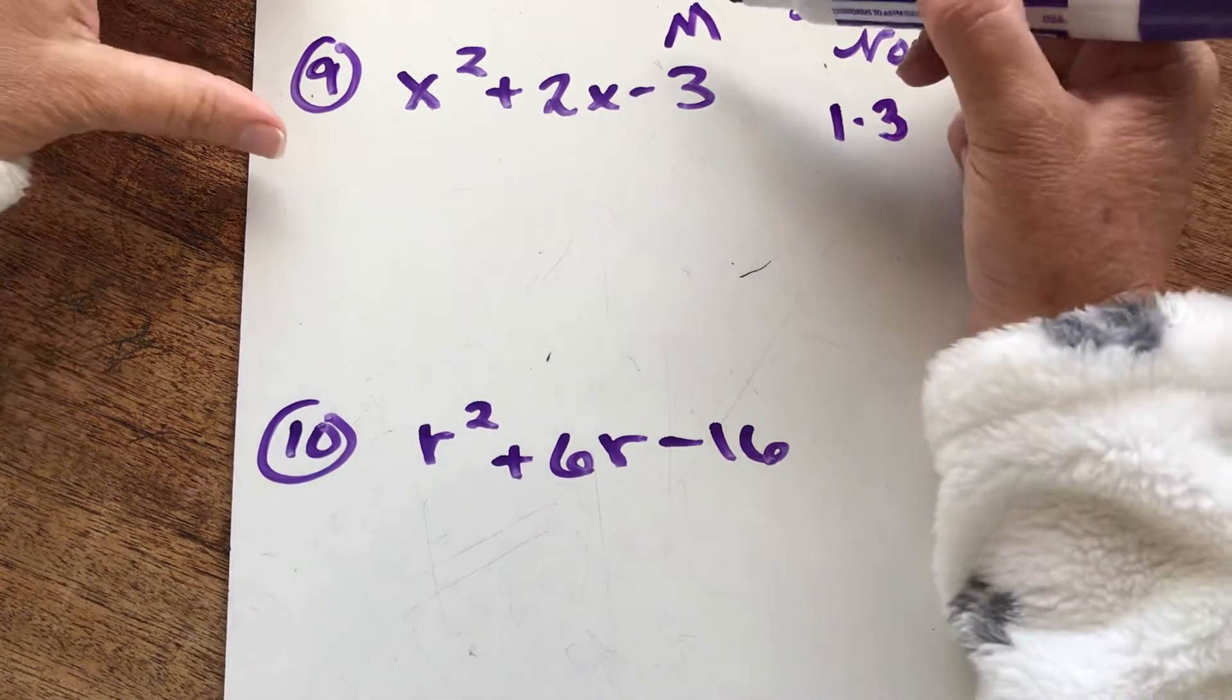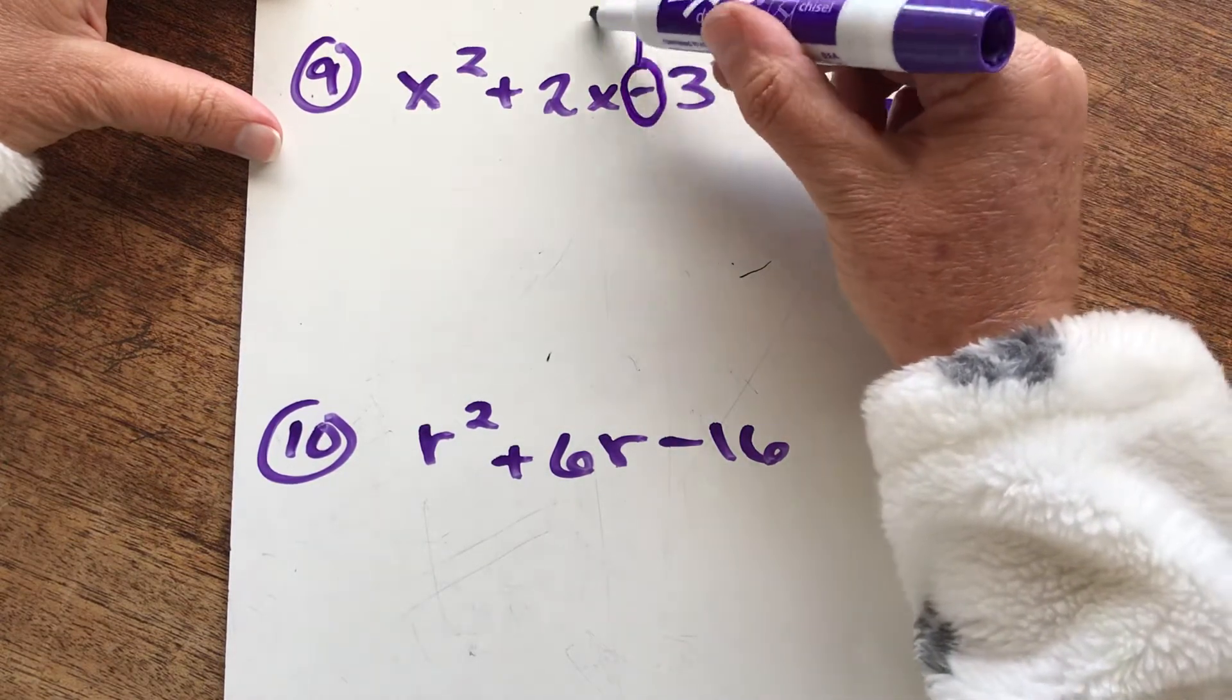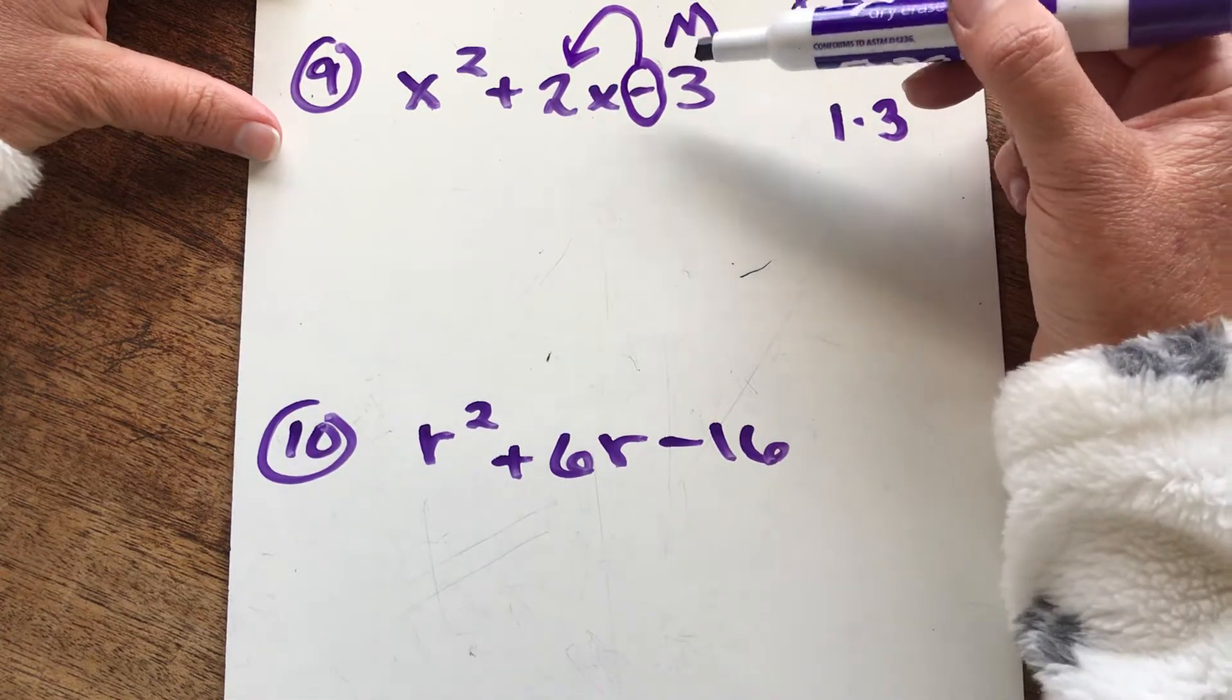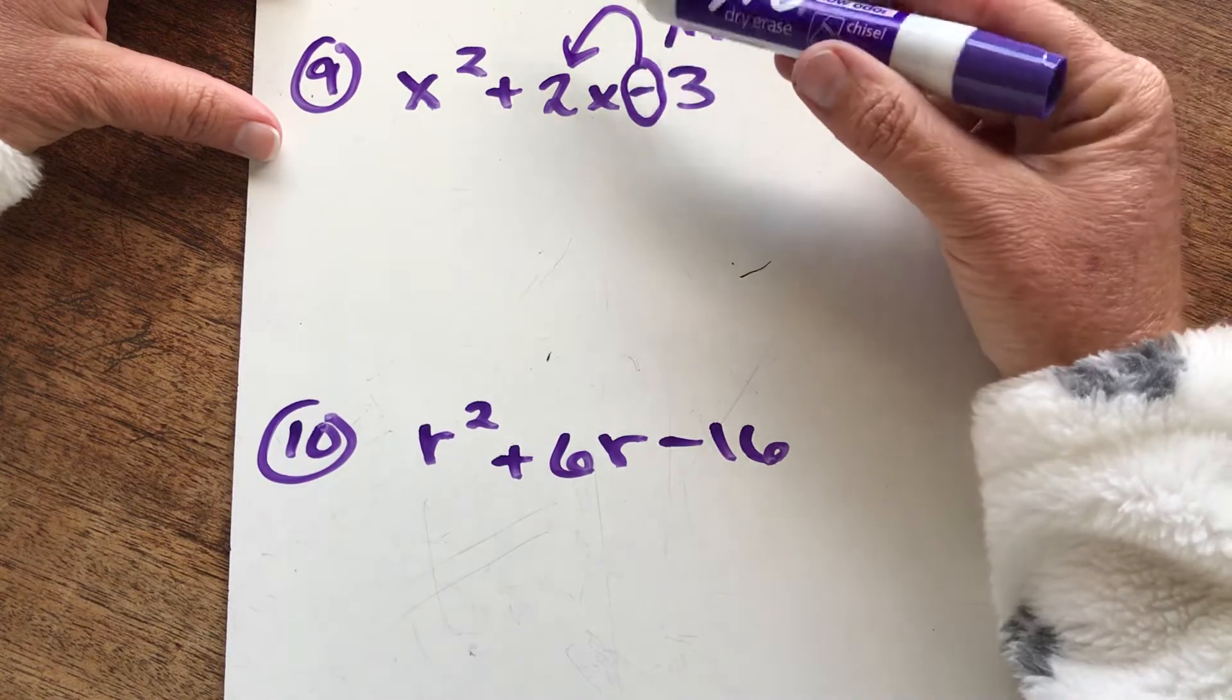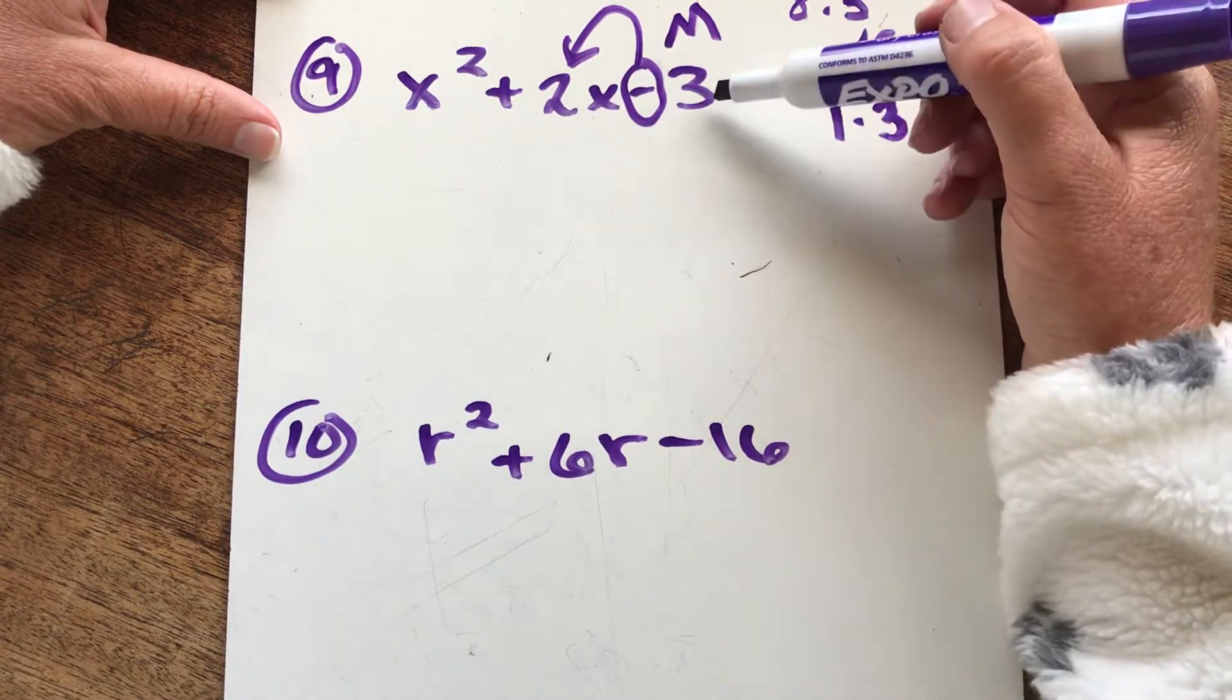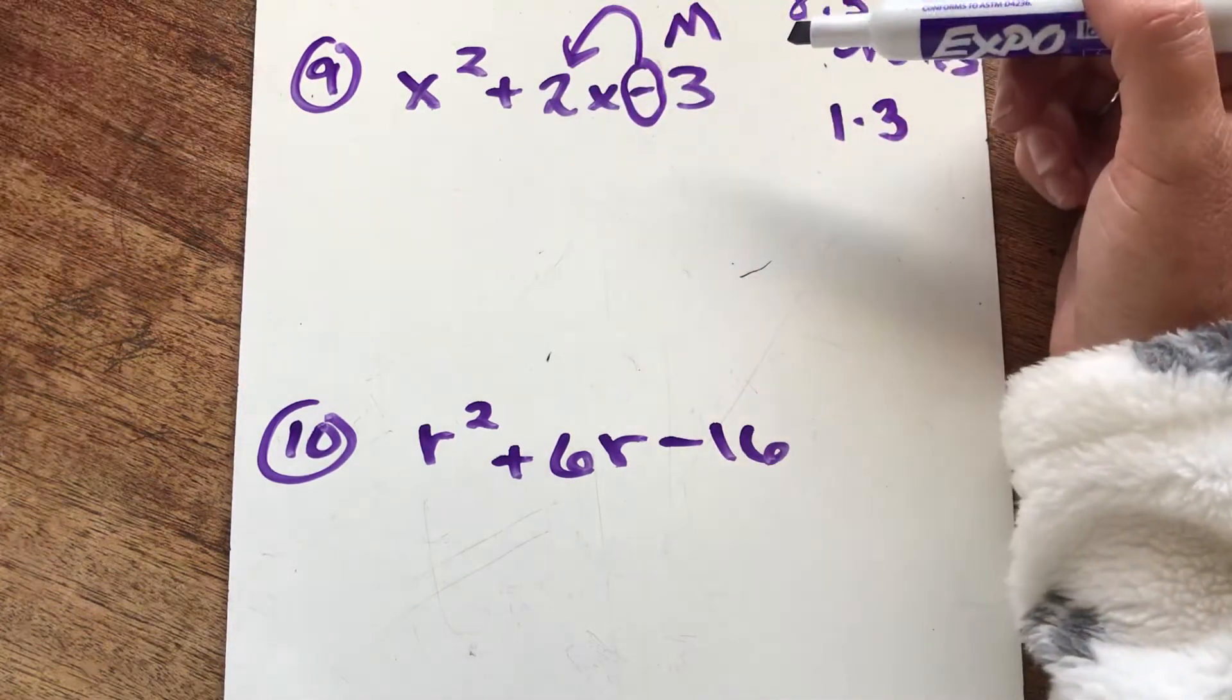So I'm thinking of two numbers that multiply to give me three but subtract to give me two. Let me say that one more time. I'm thinking of two numbers that multiply to give me three, that subtract to give me two. So two numbers that multiply to give me three, well, specifically negative three, and multiply and subtract to give you a positive two.